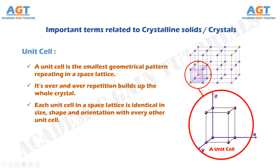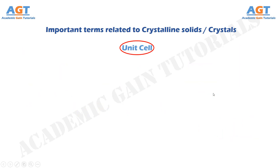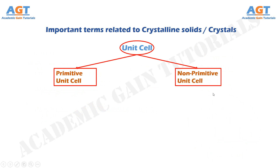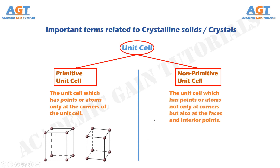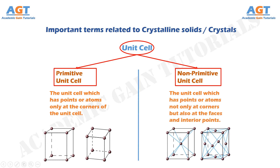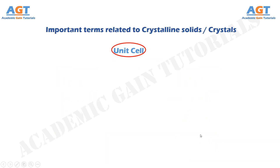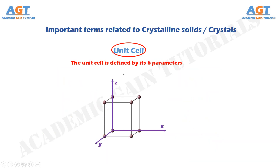Unit cells are of two types: primitive unit cell and non-primitive unit cell. A primitive unit cell is one which has points or atoms only at the corners of the unit cell. On the other hand, a non-primitive unit cell has points or atoms not only at corners but also at the faces and interior points.